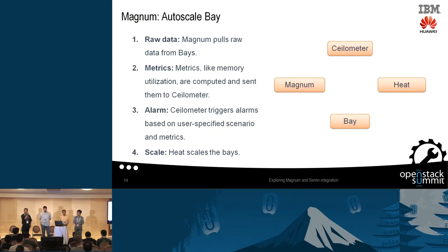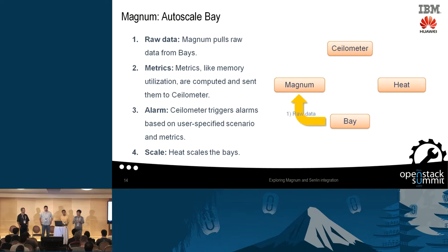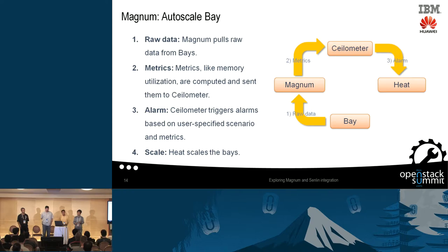Now I'll talk about how Magnum enables auto-scaling — this blueprint is close to finish. It works in several steps: first, a background task periodically pulls metrics from the Kubernetes API; Magnum analyzes the data and sends metrics to Ceilometer; if a metric stays beyond a threshold specified by the user, Ceilometer triggers an alarm; and then Heat scales the Bay. This is how Magnum enables auto-scaling at the Bay level.